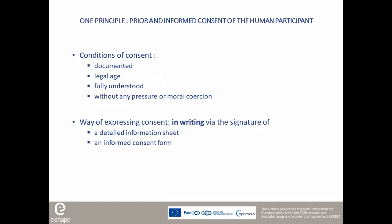Compliant human participation means that you have to get, before any participation, an informed consent. The consent must be given by someone of legal age, must be fully understood, and be given without any pressure or moral coercion. It must be informed, so you have to give precise information. And it must be given in writing, because you have to keep evidence of the existence of the consent. You have to collect, via the signature of a detailed information sheet and an informed consent form, the expression of the consent of the participant.